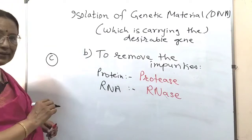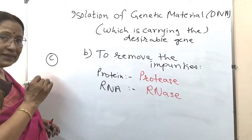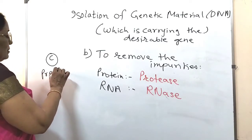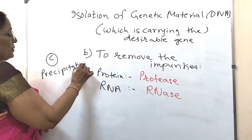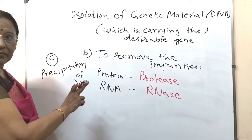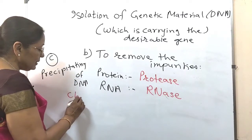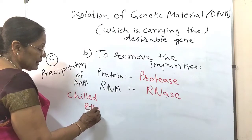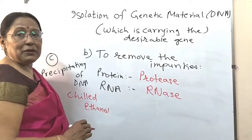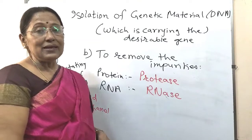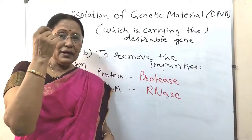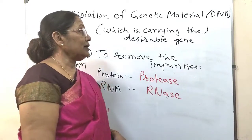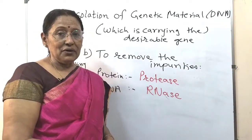The third step is precipitating the DNA. This is done by adding chilled ethanol to it. When you add chilled ethanol, the DNA precipitates out as long threads which can be spooled out. In this way, you obtain the DNA which is carrying the gene of interest.